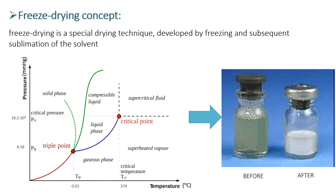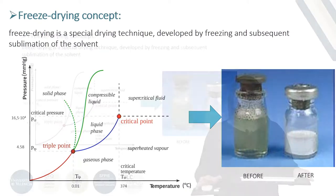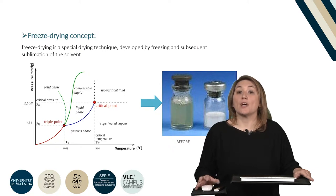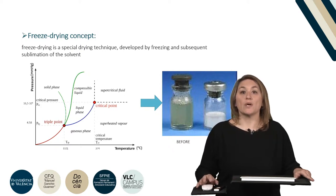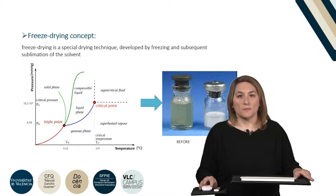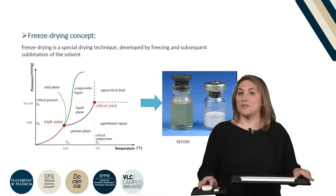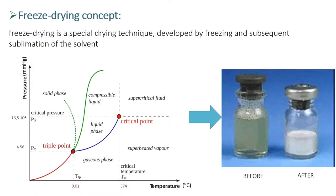If we look at the graph on the slide, we can see that the lower the pressure, the lower the temperature at which the ice begins to sublimate. In addition, if we work at pressures below the triple point, we can avoid the liquid state. Looking at the three-phase diagram, we can see that at pressures close to vacuum, the ice would begin to sublimate at a relatively low temperature. Therefore, working conditions at low pressures allow moderate temperatures, which make this drying optimal for thermolabile products.